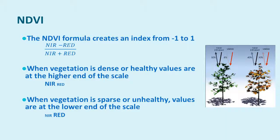We can use this to simply interpret the scene: healthy vegetation gives high numbers, unhealthy vegetation gives low numbers — very simple and straightforward. The NDVI is relatively simple to understand; we're simply comparing two bands and using that to help us interpret what's going on within our scene.